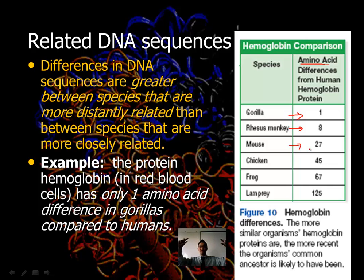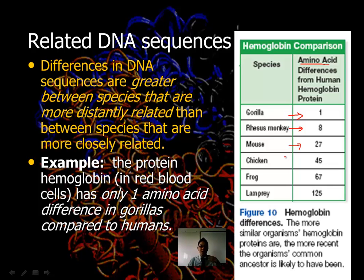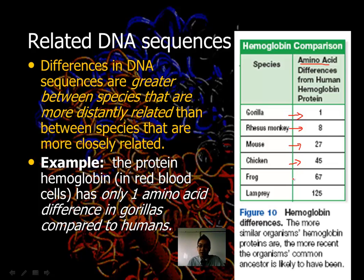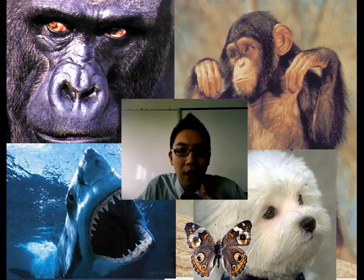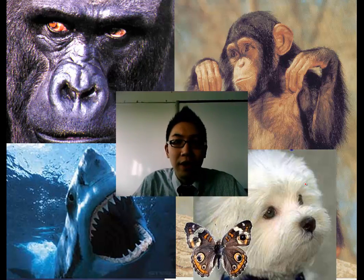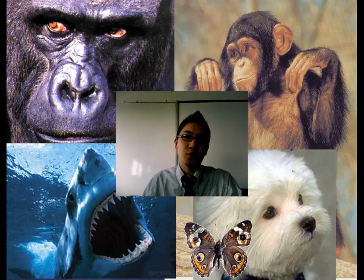If you put a human and a gorilla's hemoglobin protein sequence side by side — out of about 400 amino acids — they differ by only one. Humans and rhesus monkeys differ by eight. Mice are further away, and frogs further still. If you asked any kid whether they're more similar to a mouse or a frog, they'd say mouse — and the amino acid and DNA sequences match exactly that prediction. Incredible stuff. Make sure to continue on to part two.